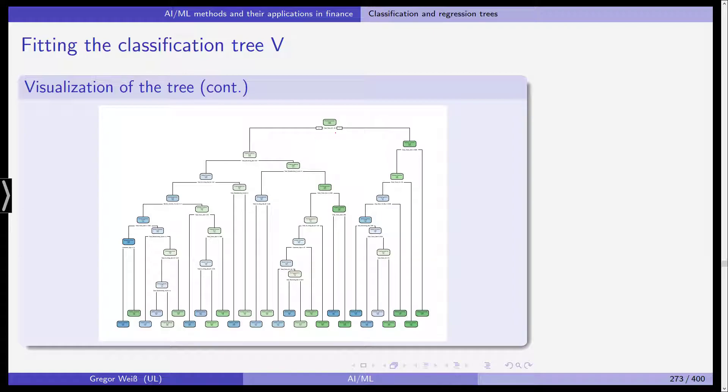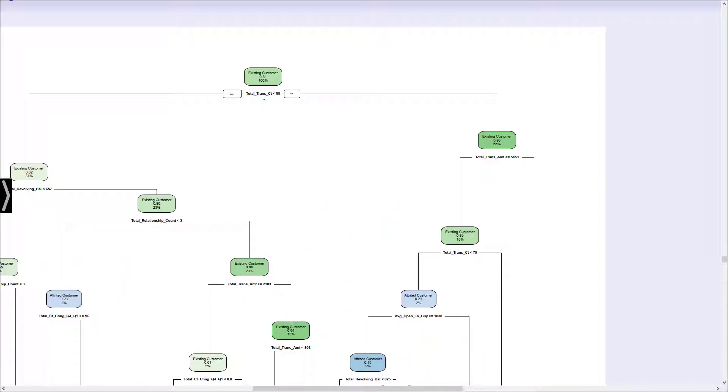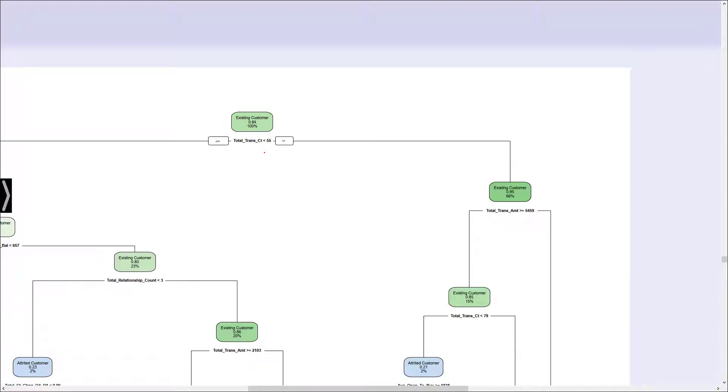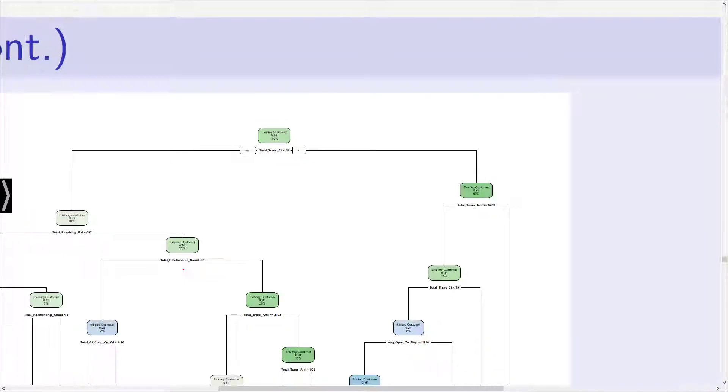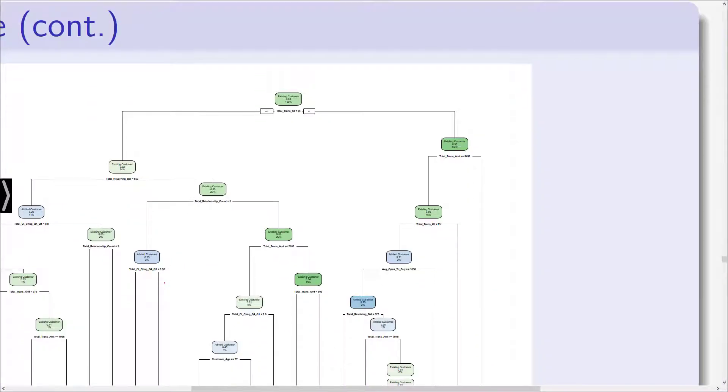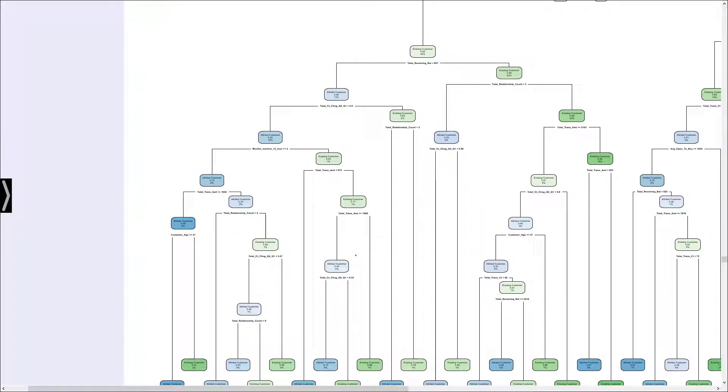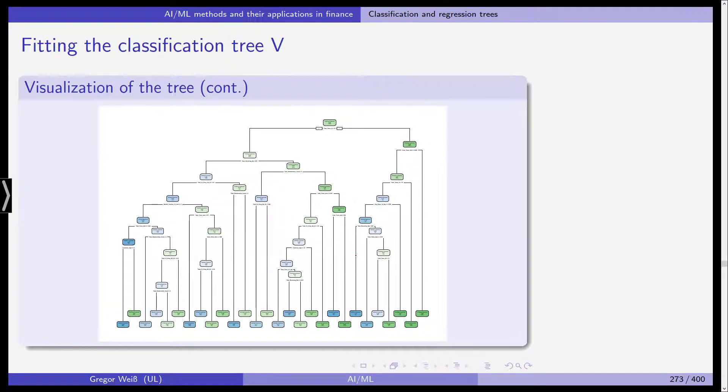The result is shown on this slide. If you have the slides, you can actually zoom in here. We start out here with existing customer and we have 100% total transaction count, total transaction amount, total relationship count. You can see those numerous features. We have customer age, customer age being greater or equal than 37, total revolving balance. These are all the cutoffs. In the end you get a tree that looks like this. If you zoom in or do it at home with the same code, you get this tree. As one can see, this is actually quite deep.